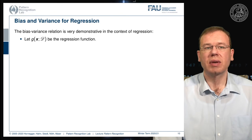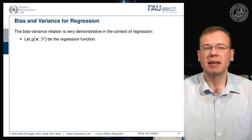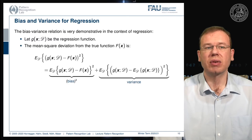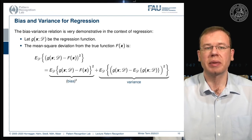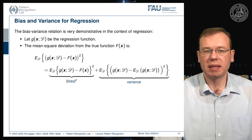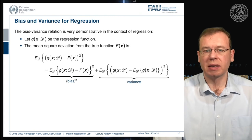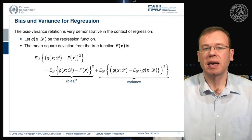The bias-variance relation can be demonstrated well in regression. Let g(x) be the regression function. We can compute the mean square deviation from the true function using g, which is the expected value of the squared difference between the two. From this we can determine the bias — the expected value of the squared difference — and the variance — the expected value of the actual function value minus the expected value of the function, which is a measure of the variability of the estimation function.